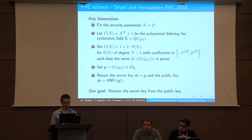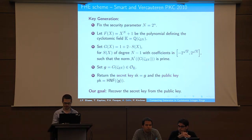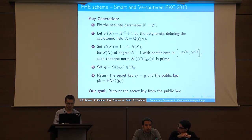The secret key is this generator G, and the public key is any Z-basis of the ideal generated by two generators. Our goal is to recover the secret key from the public key — so this is key recovery, not a full decryption attack.